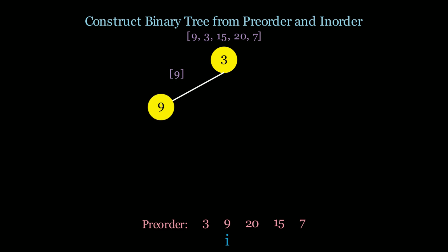We create node 9 and now for node 9 we need to create the left and right subtrees. We split the sub-array — there's only one element, 9, and we've already used it. So the left and right values are nothing — the empty list. There are no more values to the left or right of 9, so this is the base case: if the in-order traversal is empty in our recursive calls, we return null. So we return null for both the left and right subtrees of node 9.